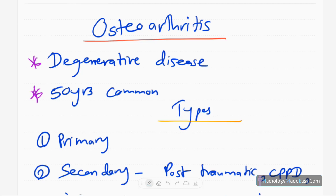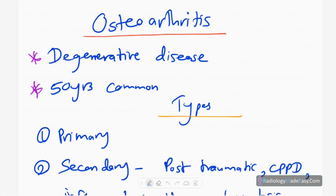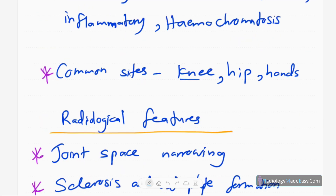Osteoarthritis is one of the commonest diseases in the world. It is a degenerative disease and is common in patients above 50 years of age. There are several types — the main types are primary and secondary. Secondary is usually due to post-traumatic causes, calcium pyrophosphate crystal deposition disease, secondary inflammatory arthritis, and also hemochromatosis.